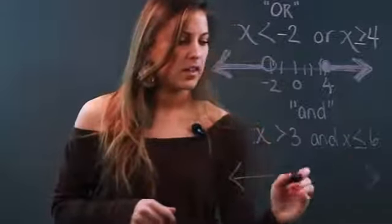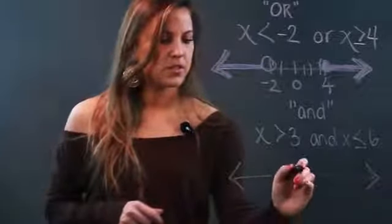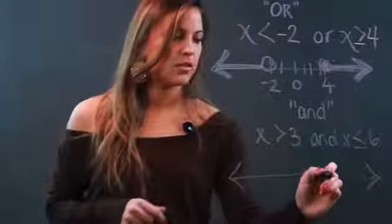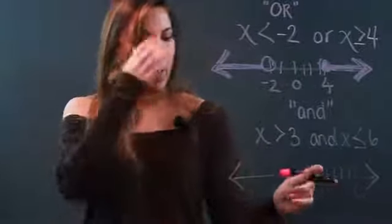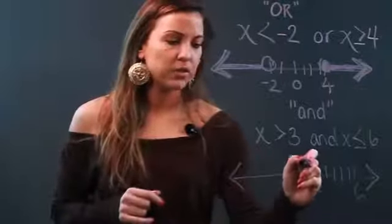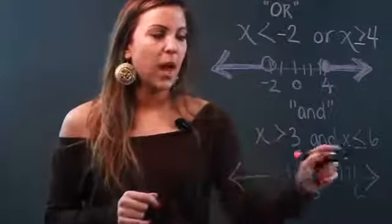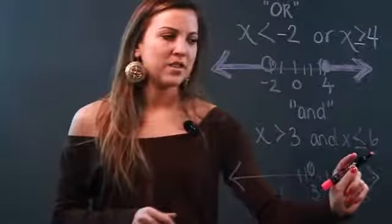1, 2, 3... 1, 2, 3, 4, 5, 6. I'm graphing X is greater than 3 with an open circle on 3 because there's no line underneath, but I'm only going to graph it up until the 6 because my boundary is that X is less than or equal to 6.